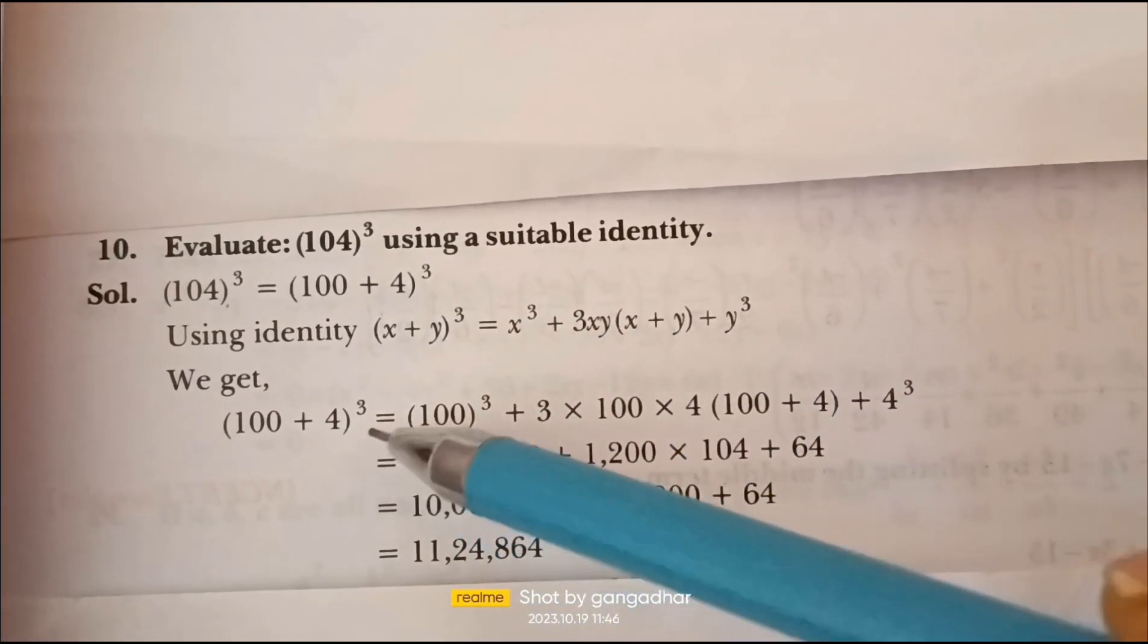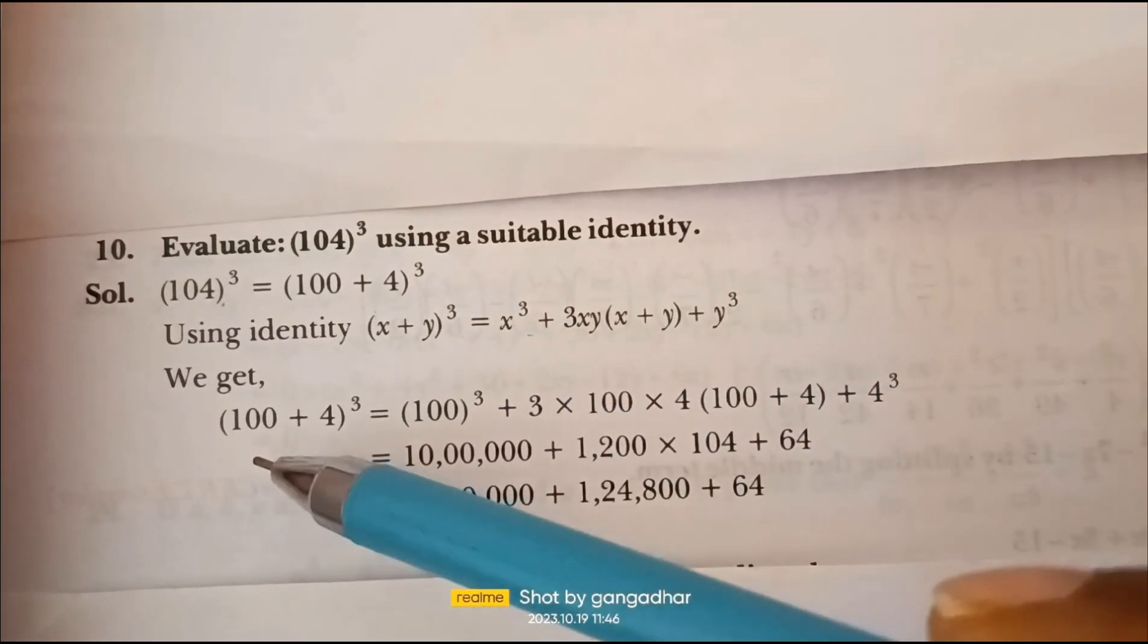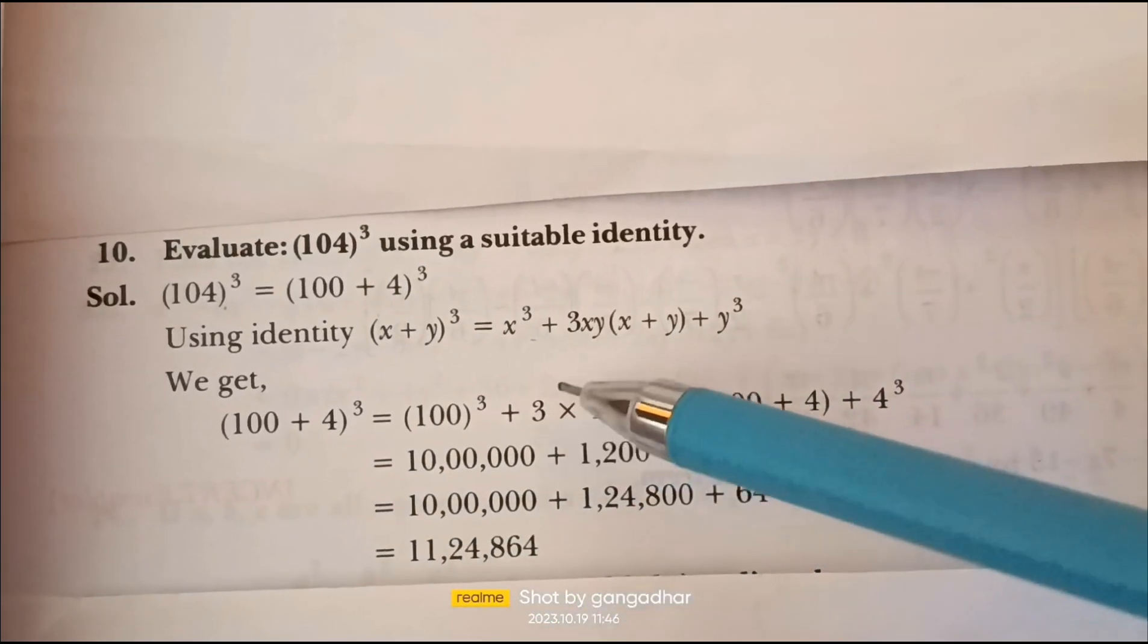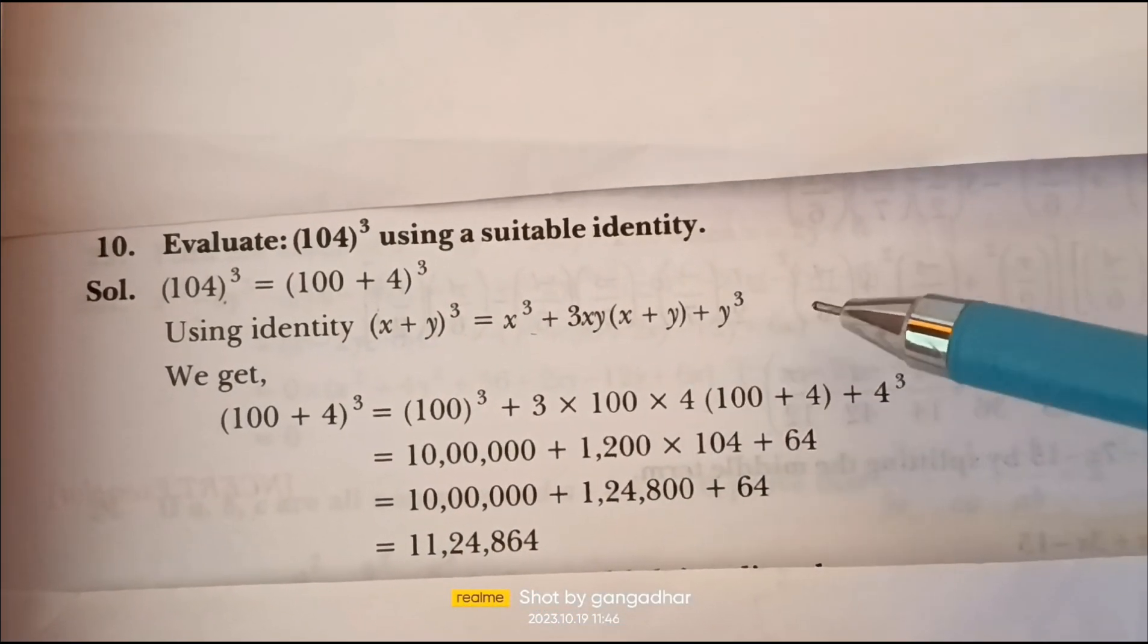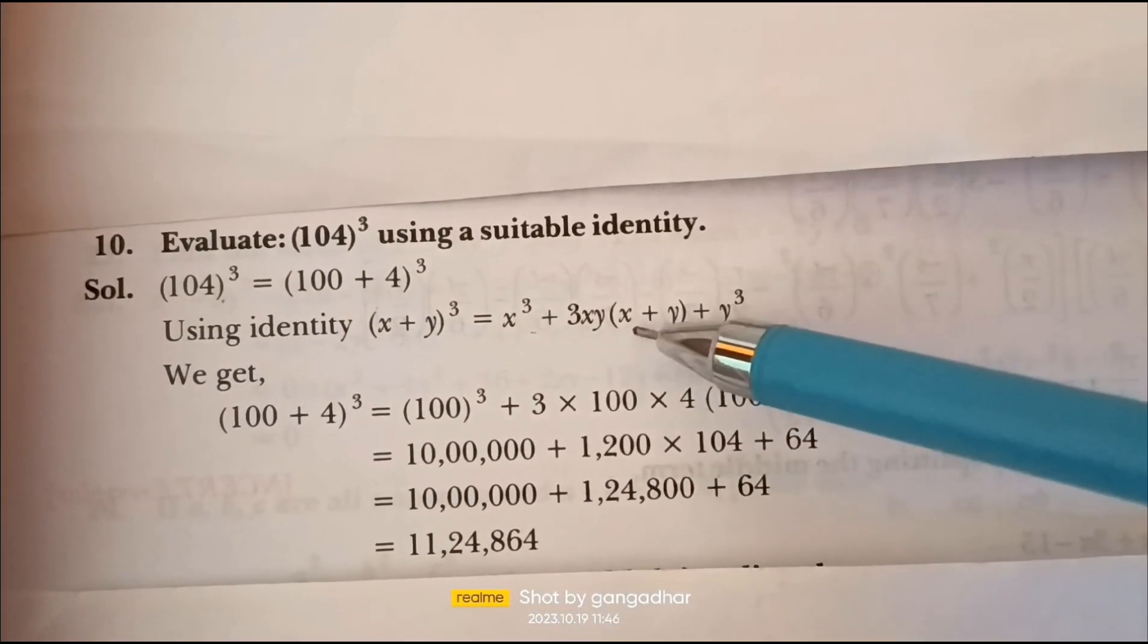104³ can be written as (100 + 4)³. In place of x, we have 100. This gives us 100³ + 3 × 100 × 4 × (100 + 4) + 4³.